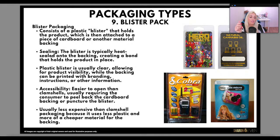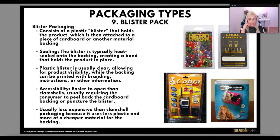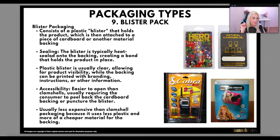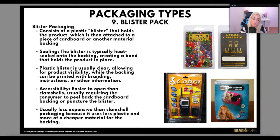The next type is blister pack. The main difference between blister pack and clamshell is that clamshell has plastic on the front and back and is just shut. Blister would usually have a plastic back — it consists of a plastic blister that holds the product, which is then attached to a piece of cardboard or other material backing. The blister is typically heat sealed onto the backing, creating a bond that holds the product in place. The plastic blister is usually clear, allowing for product visibility — great for retail — while the backing can be printed with branding, instructions, or any other information. They're easier to open than clamshells and usually less expensive because they use less plastic.